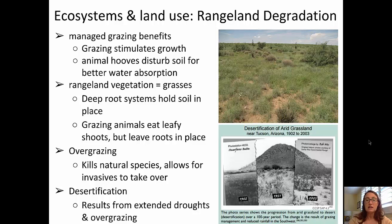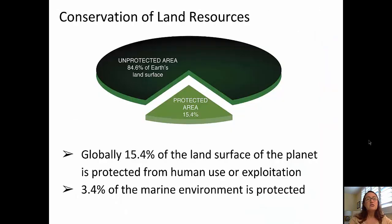With overgrazing and reduced precipitation, we see desertification of the land. You can see a picture in the bottom left corner of what used to be a grassland in Arizona in 1902 — just a little over 100 years later in 2003, it has gone from a verdant green pasture to desert land. When thinking about conservation of land resources, we need to recognize that about 84.6% of Earth's land surfaces is unprotected, and only 15.4% is protected.